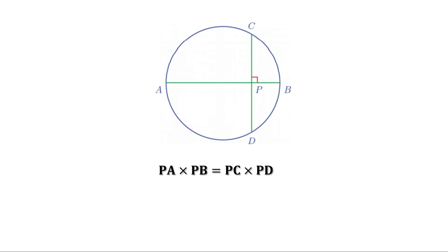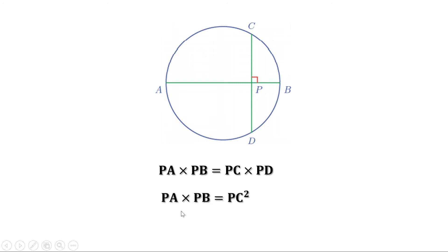The perpendicular drawn from the center to a chord bisects the chord. Here, AB is perpendicular to CD. Since AB is the diameter, it passes through the center. So we can consider AB as the perpendicular drawn from the center to chord CD. Therefore, the diameter AB bisects chord CD. That means the length of PC and PD are equal. Since PC and PD are equal, we can replace PD by PC. Then we get PA into PB equal to PC into PC, and PC into PC is PC square. Therefore, PA into PB equal to PC square.